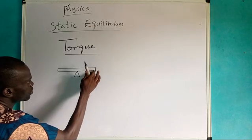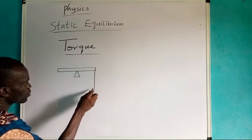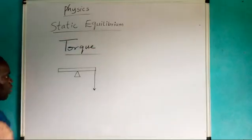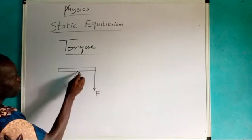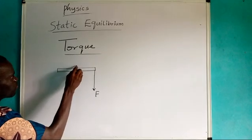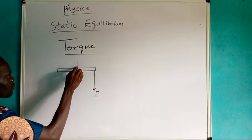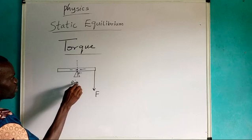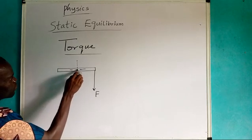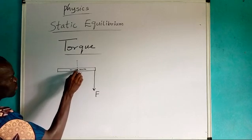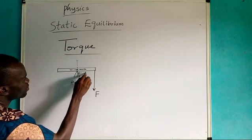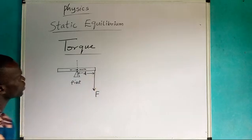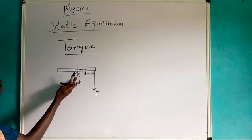Now let me apply a force to this body. If I apply a force, it means that this body will move down — I push this body to move down, and this force is F. If you apply a distance, this is the point of rotation. We are going to have a distance D — that is the distance covered as we take this point here.